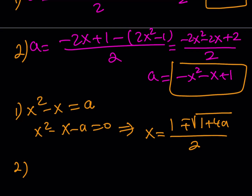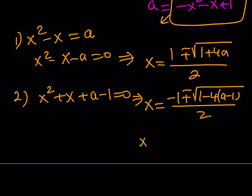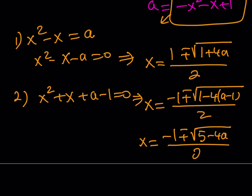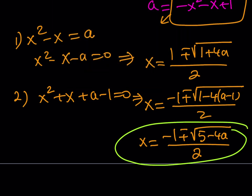The second value of a gives x squared plus x plus (a minus 1) equals 0. Applying the quadratic formula: x equals (negative 1 plus or minus the square root of 1 minus 4(a minus 1)) over 2. Simplifying: 1 minus 4a plus 4 gives 5 minus 4a. So x equals (negative 1 plus or minus the square root of (5 minus 4a)) over 2. These are the four solutions for x in terms of a.